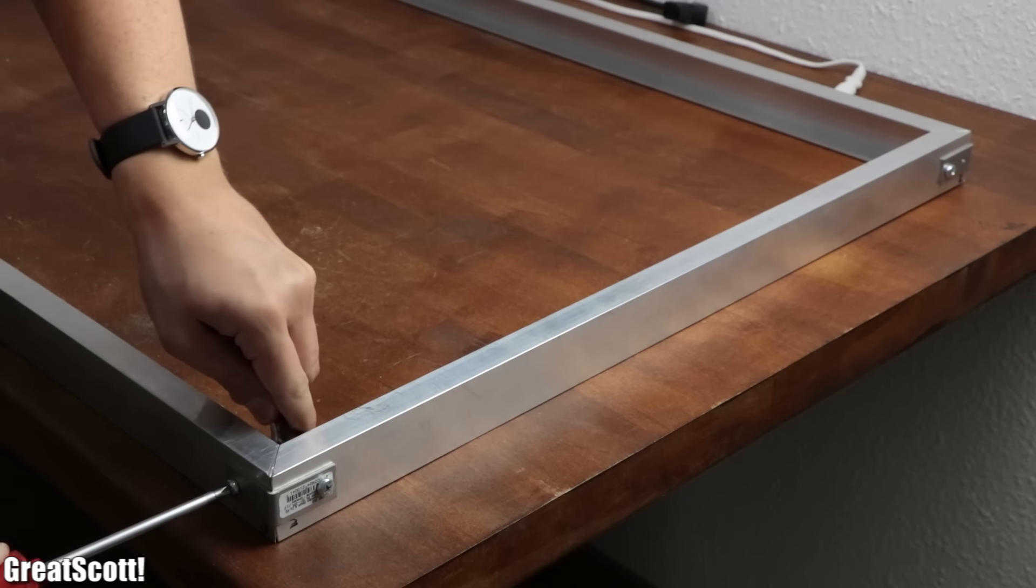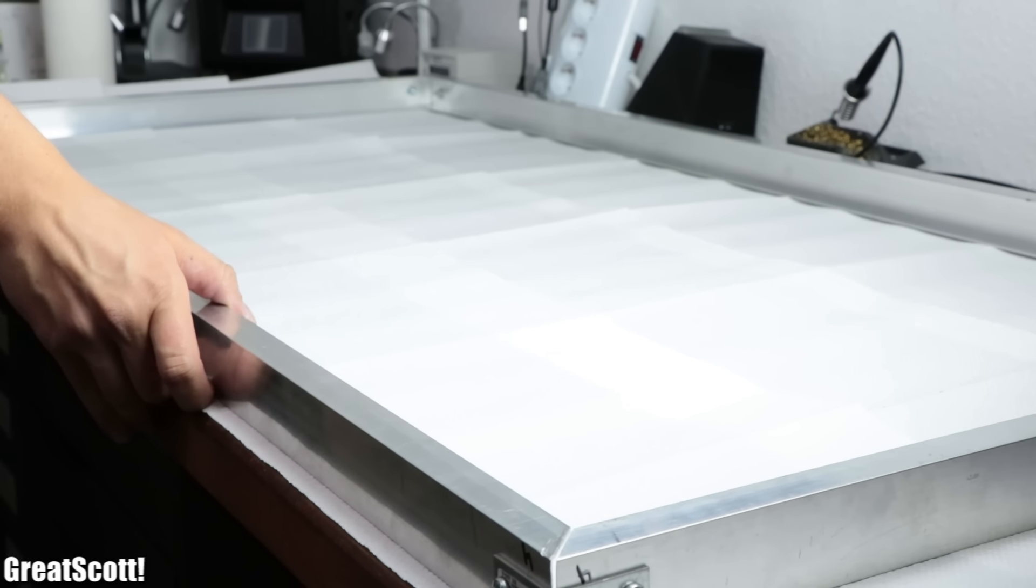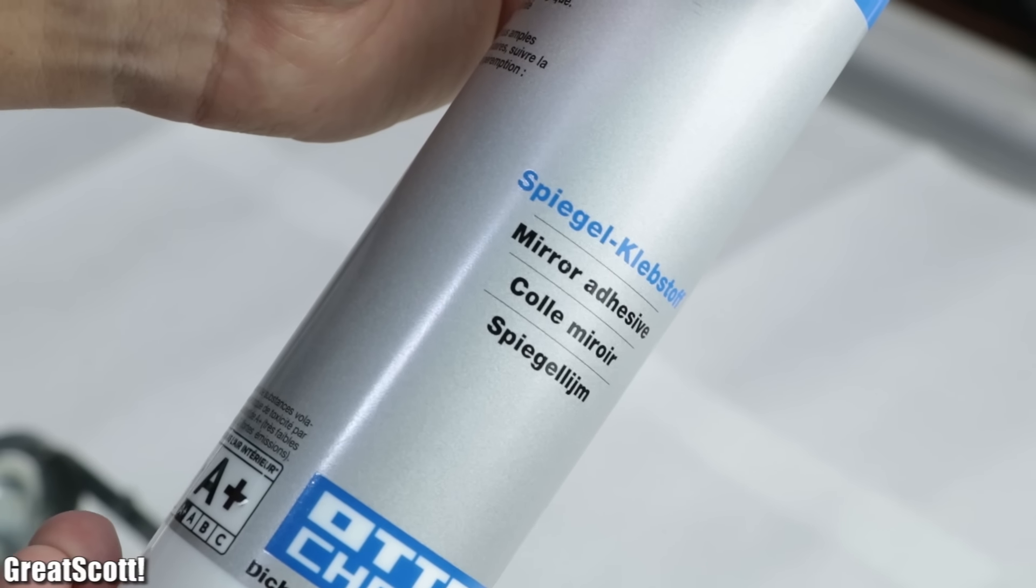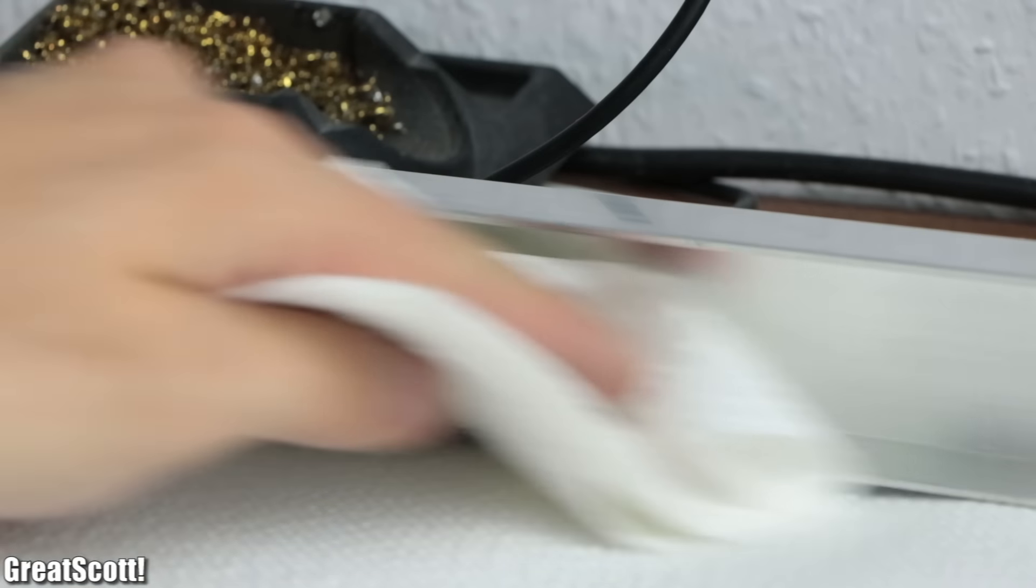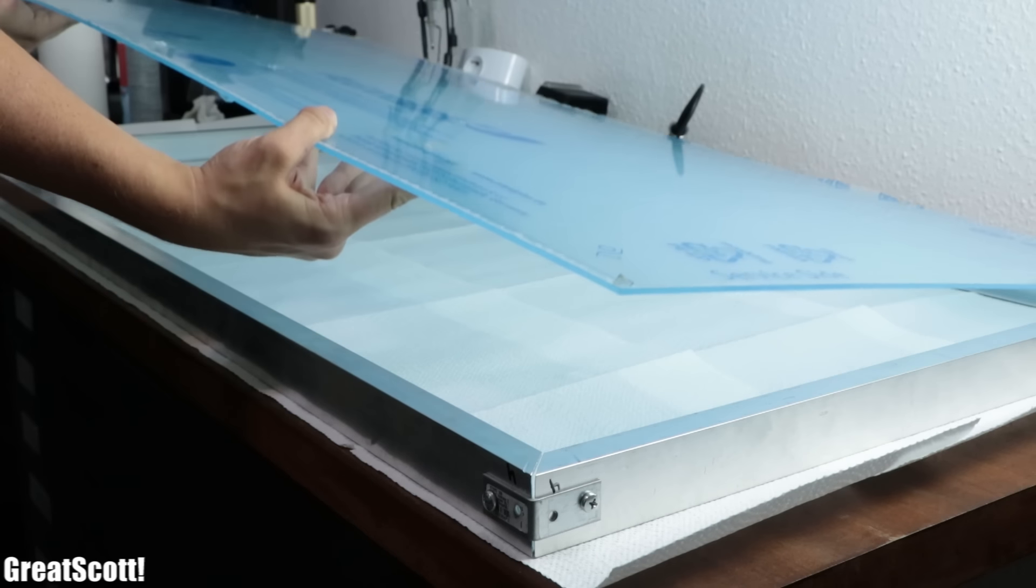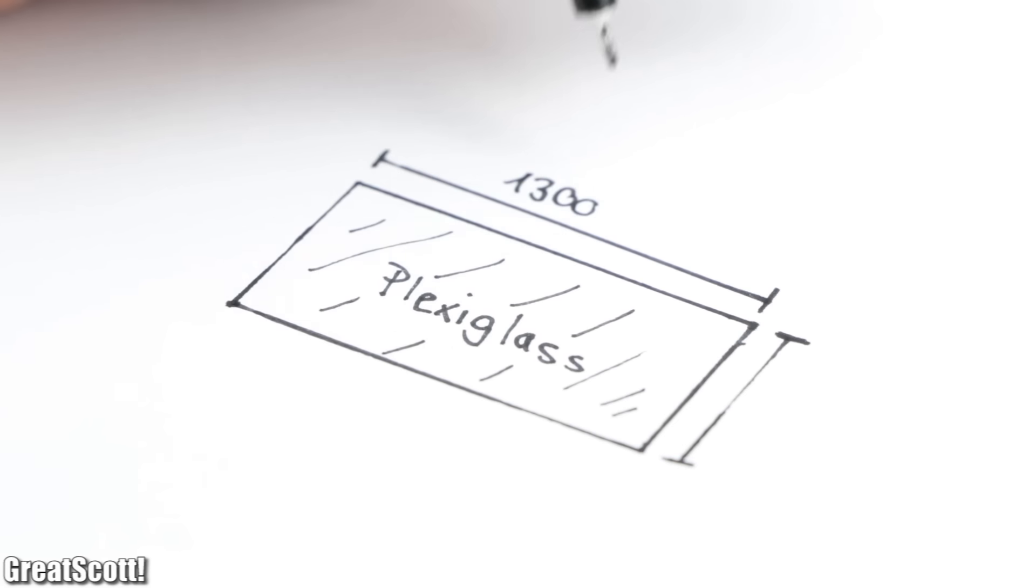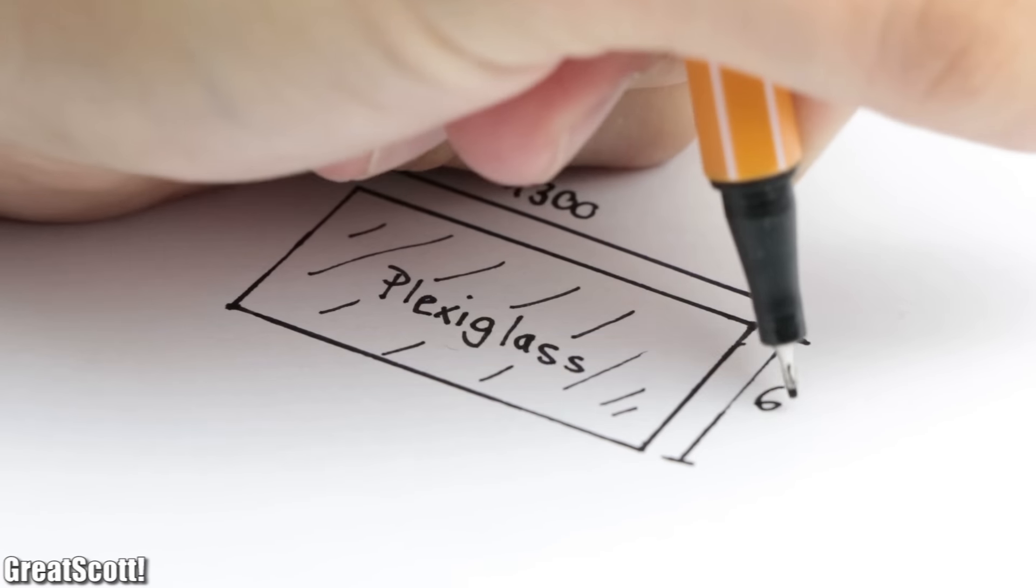Once that was done I added paper towels to my work surface because it was about to get messy due to the mineral adhesive that I used. But before that I properly cleaned the aluminum frame and brought in a 3 millimeter thick piece of clear plexiglass with dimensions of 130 by 60 centimeters.